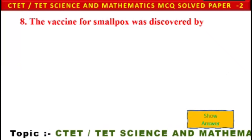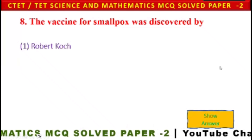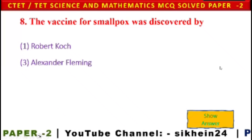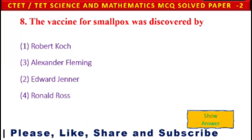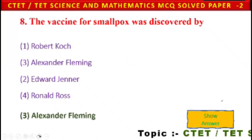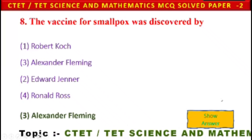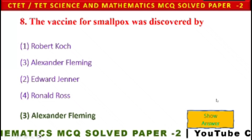Next question: The vaccine for smallpox was discovered by — options include Robert Koch, Alexander Fleming, Edward Jenner, and Ronald Ross. Alexander Fleming is given as the answer for the smallpox vaccine in this session.